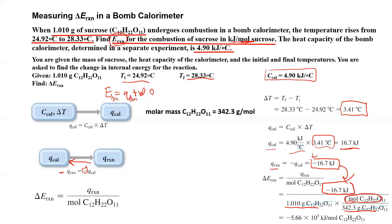Bomb calorimeters at constant volume allow us to measure the changes of energy in a reaction because work is zero. We can measure the heat of the calorimeter using its heat capacity and the temperature change. The heat of the calorimeter is equal in magnitude, just opposite in direction, to the heat of the reaction. I hope this video helps and makes sense. If you have any questions, feel free to email me or leave them in the comments. Thanks so much.